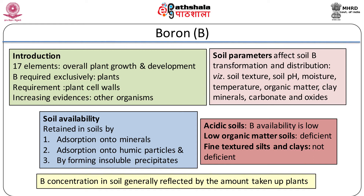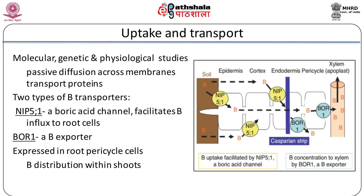The range between boron deficiency and toxicity symptoms in plants is typically narrow — 0.028 to 0.093 millimolar per litre for sensitive crops and 0.37 to 1.39 millimoles per litre for tolerant crops. Boron concentration in soil is generally reflected by the amount taken up by plants. Molecular, genetic and physiological studies have revealed that boron transport in plants not only occurs by passive diffusion across membranes, but is also catalyzed by regulated transport proteins. These transporters function to support normal growth under both low and high boron conditions.